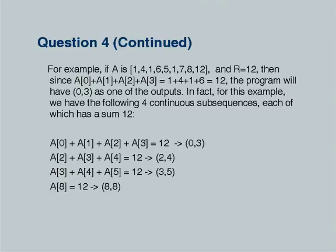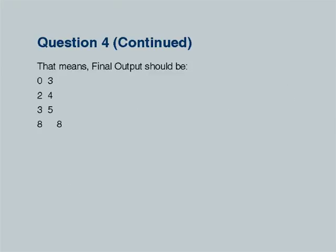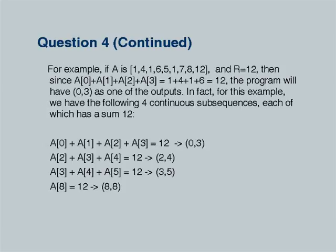In the given example there were four subsequences adding up to 12, so the output should be: 0,3 — 2,4 — 3,5 — 8,8. The pair 8,8 corresponds to the last element, 12, which alone adds up to 12. The subsequence starts and ends at the eighth element. I hope the problem was understood by everybody.